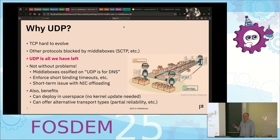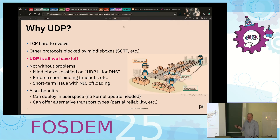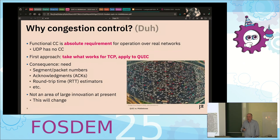There are issues with UDP because the network has ossified around it too — there's an assumption that UDP is really only for DNS, so you don't need to sustain long-lived flows. But there are also benefits: you can deploy in user space without modifying the kernel to upgrade your QUIC stack, and you can offer alternative transport types — not just a byte stream like TCP, but other things.